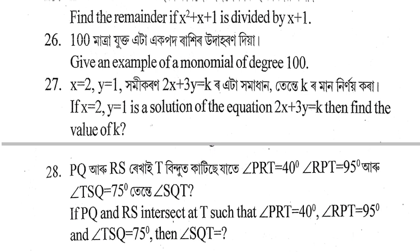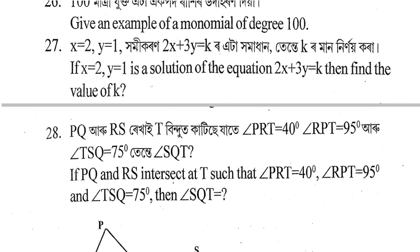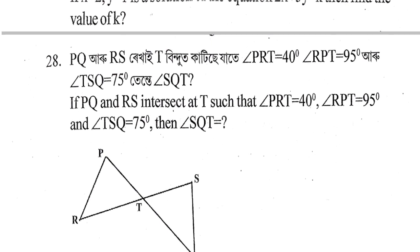Give an example of a monomial of degree 100. Next question: If x equals 2 and y equals 1 is a solution of the equation 2x plus 3y equals k, then find the value of k.